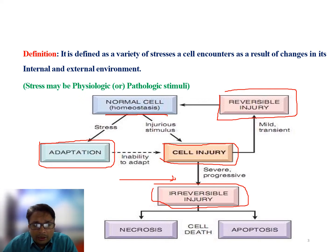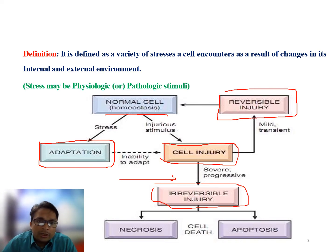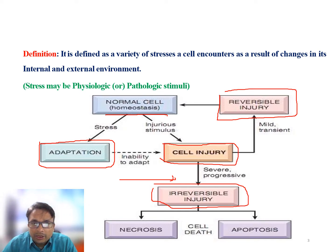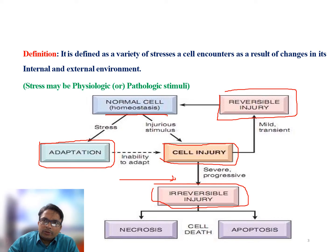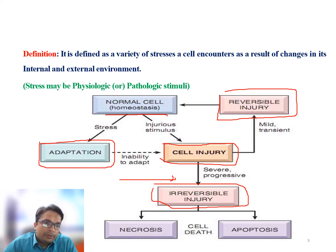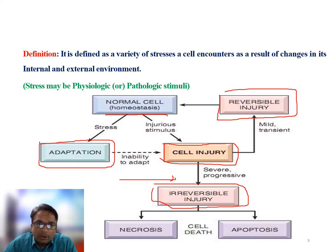In reversible cell injury, the cell injury is mild and transient. After the healing process is completed, the cell can regain its position and the injury is reversible. Whereas if there is a slow and progressive cell injury that persists for a longer period of time, that results in development of irreversible cell injury — where once the injury occurs, the cell is not able to recover.